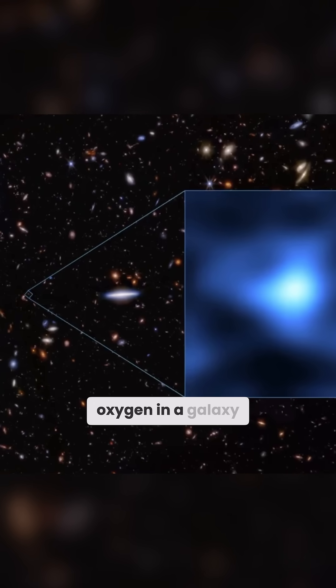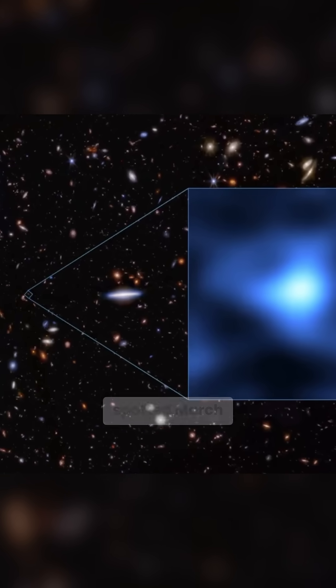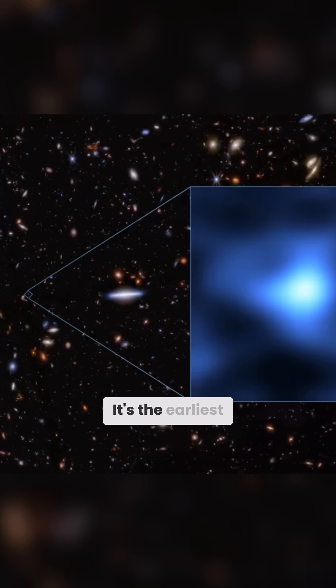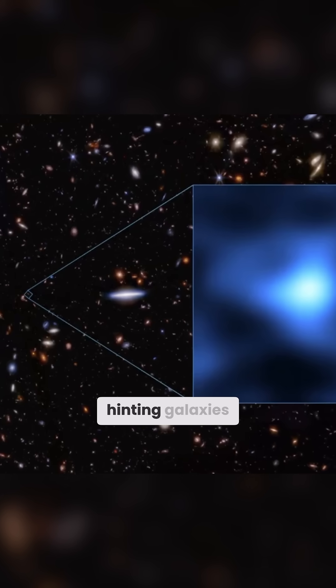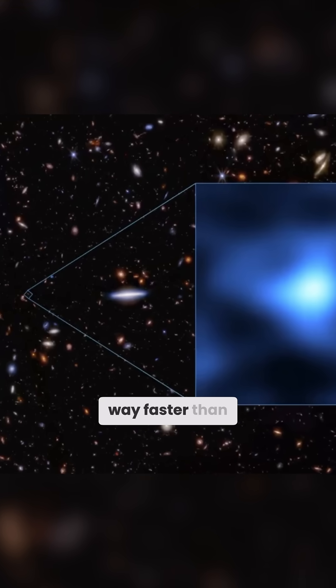Then, oxygen in a galaxy just 1 billion years post big bang, spotted March 20th by Webb. It's the earliest oxygen ever, hinting galaxies cooked up elements way faster than we thought.